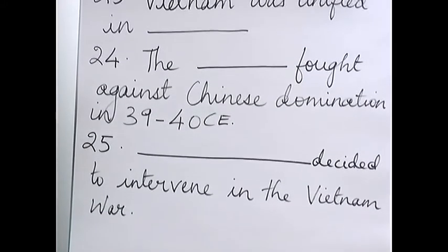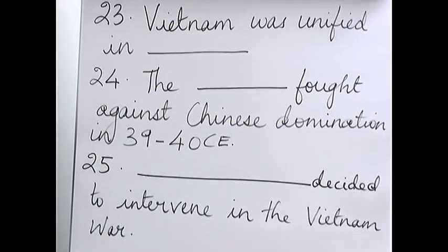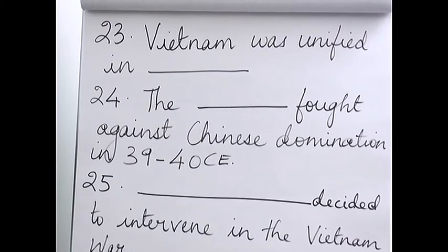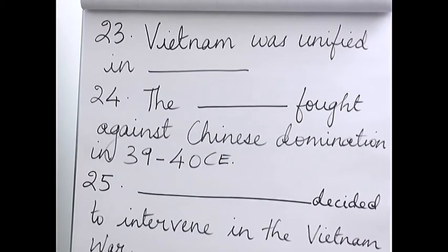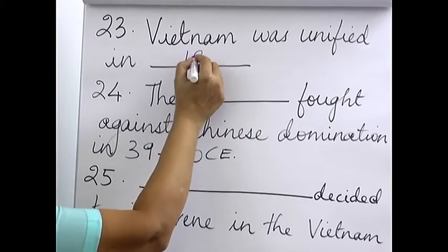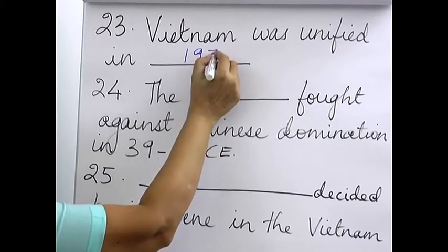Twenty-third: Vietnam was unified in which year? There was North Vietnam and South Vietnam. This was in 1975.